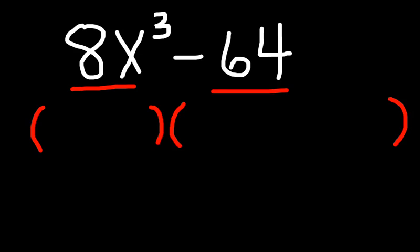Now I will take the cubed root of the first term, which is 8x cubed. That will be 2x, because 2x times 2x times 2x is 8x cubed. I will use the same sign as is used in the original equation, which is minus. And I will take the cubed root of 64, which is 4, because 4 times 4 times 4 is 64.